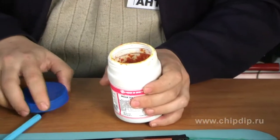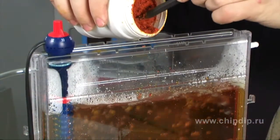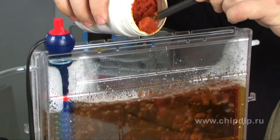Now we prepare the solution of chlorine iron, and for that we dissolve the powder in water, taking two parts of water and one part of powder.